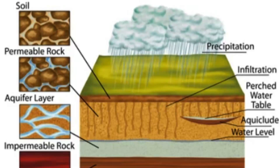What is the difference between porosity and permeability in hydrogeology? Porosity and permeability are two important properties in the field of hydrogeology, which is the study of the movement and distribution of groundwater. While these terms are often used interchangeably, they actually refer to different aspects of the subsurface environment.